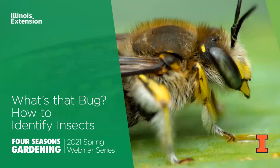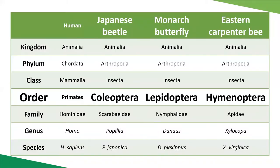Today we're going to focus on the larger groups of insects. When we talk about insects in general, we talk about beetles, butterflies, or bees, and that's typically referring to the order — those larger groups of insects. We're going to focus on how to identify these insects, at least down to order, so you can get in the general ballpark of what type of insect you have and go further from there.